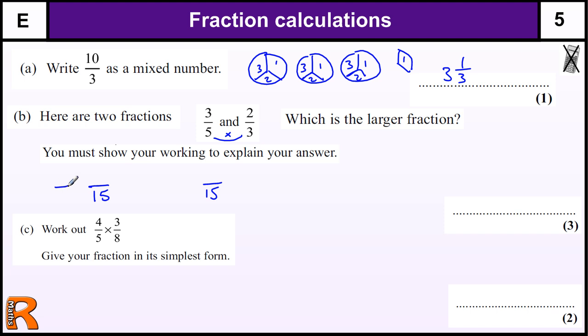Five goes into 15 three times. So if we take the top and times that by three, we get 9/15. The two-thirds we times by five, so we times the top by five and get 10/15. We can see that 10/15 is bigger than 9/15, so two-thirds is bigger.